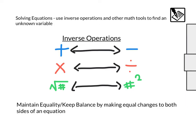We also want to always maintain equality or keep balance by making equal changes to both sides of an equation. Whatever you do to one side, you have to do to the other, or if you're only working on one side, make sure you don't change anything, even if it looks different.